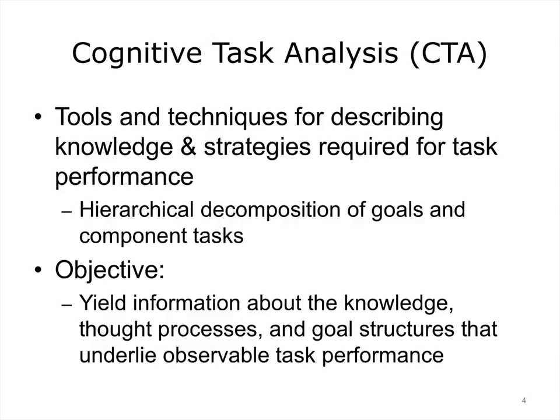The Cognitive Task Analysis, or CTA, is a family of methods for describing the knowledge and strategies required for task performance. It involves a hierarchical decomposition or breakdown of goals and component tasks. For example, performing a Google search can involve two components at minimum: one, selecting key terms, and two, evaluating the results of the search. Each of these components has distinct goal-action structures.